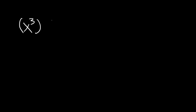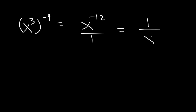Likewise, let's say if we have x cubed raised to the negative 4. First, we can multiply 3 times negative 4, which is negative 12. And then we can make the negative exponent positive by moving x to the bottom. So it's 1 over x to the positive 12.